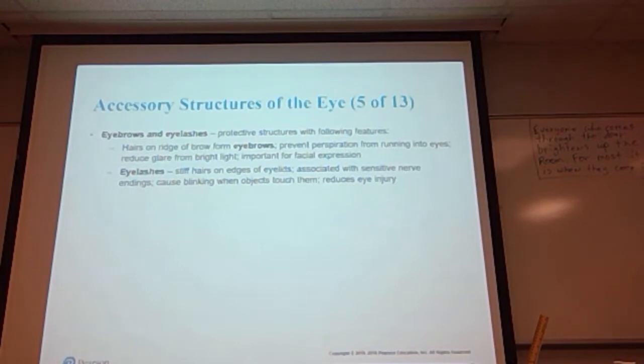They have very sensitive nerve endings which cause blinking whenever an object touches the eyelash. Evolutionarily, that plays a role in reducing injuries to the eye when things get too close—we tend to blink rather vigorously.